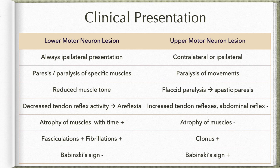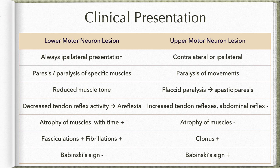In upper motor neuron lesion, the presentation can be on the contralateral or ipsilateral side depending on the site of the lesion. If the lesion is before the decussation, the presentation will be on the contralateral side. There is paralysis of movements — initially flaccid paralysis, followed by spastic paralysis after a couple of weeks.